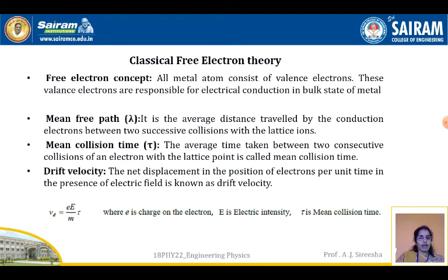The drift velocity is the velocity acquired by an electron in the presence of an electric field. Mean collision time is the time taken between two successive collisions. Resistance is because of collisions with the lattice ions or with the electrons themselves. The drift velocity Vd is given by eE/m × tau, where small e is the charge on an electron, capital E is the electric field or electric intensity, and tau is the mean collision time.